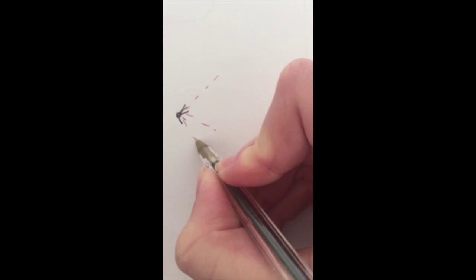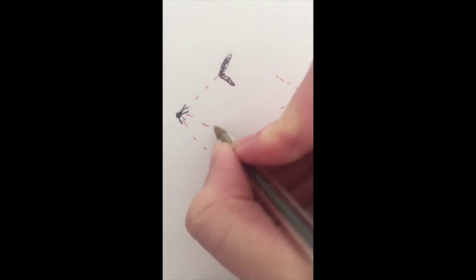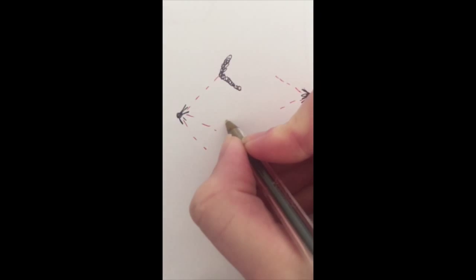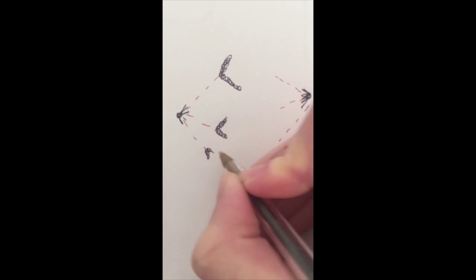Now what happens is the spindle fibers contract and shorten. And as they shorten, they pull the sister chromatids apart. So what you start to see is this forming like so. That's the big one, that's the medium-sized one, and then that's the really, really, really small one. Sometimes they ask you, what's the functions of the cytoskeleton or the microtubules? And one of them is pulling the sister chromatids apart during anaphase.